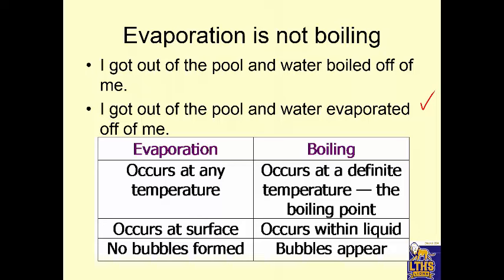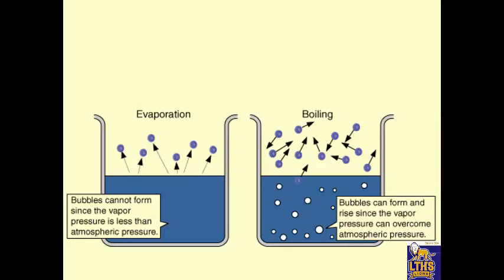Boiling occurs at a different temperature called the boiling point. It occurs everywhere within the liquid and bubbles appear because anywhere in the liquid molecules can turn to gas. Looking at a visual: in evaporation, there are no bubbles formed at the bottom because molecules down there cannot turn into a gas. Ones at the surface, if they absorb enough energy, can evaporate. In boiling, molecules at the surface and anywhere in the liquid can turn into a gas, so you'll see bubbles.